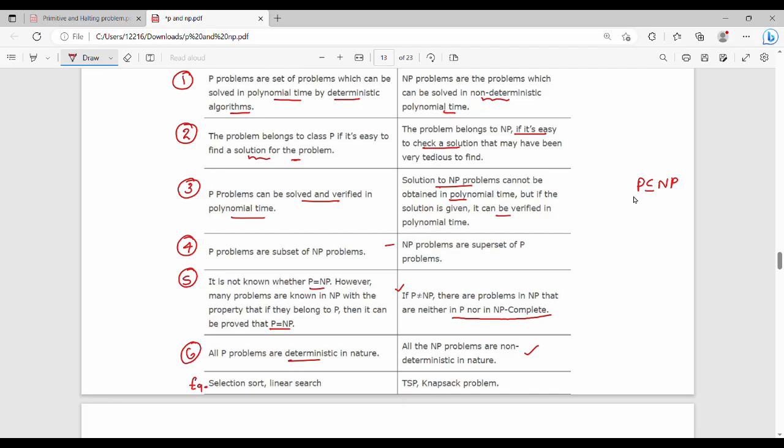P problem examples: selection sort, linear search. NP problem examples: TSP, knapsack problem.